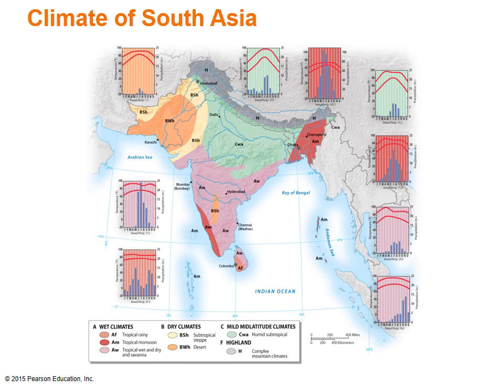However, the climographs for locations on the east coast, such as Madras, India, and Colombo, Sri Lanka, show how some locations also receive rain from the northeast monsoon of the winter.